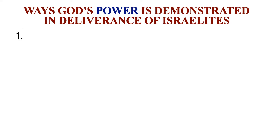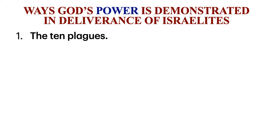Number one, God's power is seen in the ten plagues that God brought on the Egyptians. These include the plague of blood, frogs, gnats, flies, death of animals, boils, hailstorms, locusts, darkness, and the death of the firstborn sons of the Egyptians.